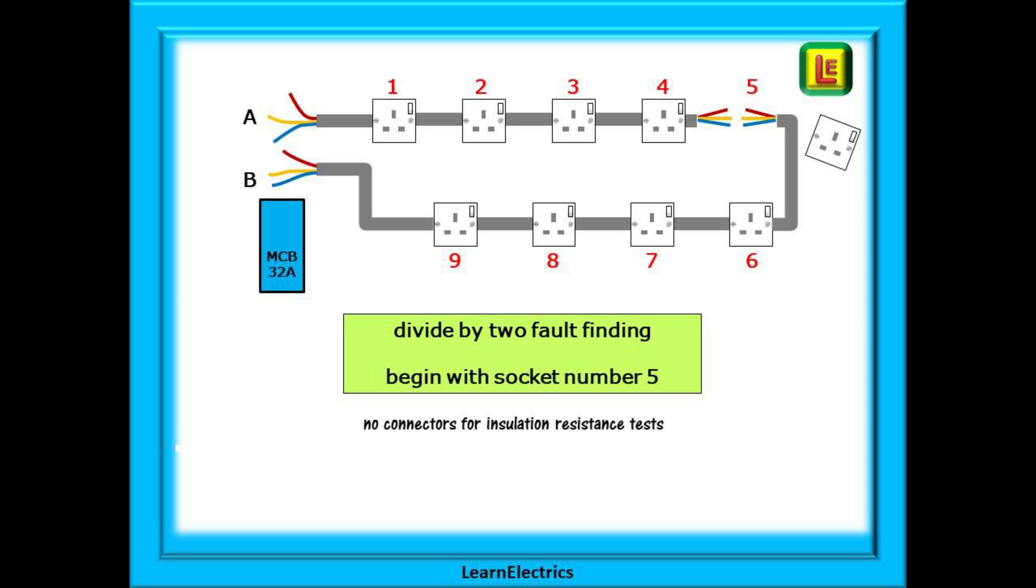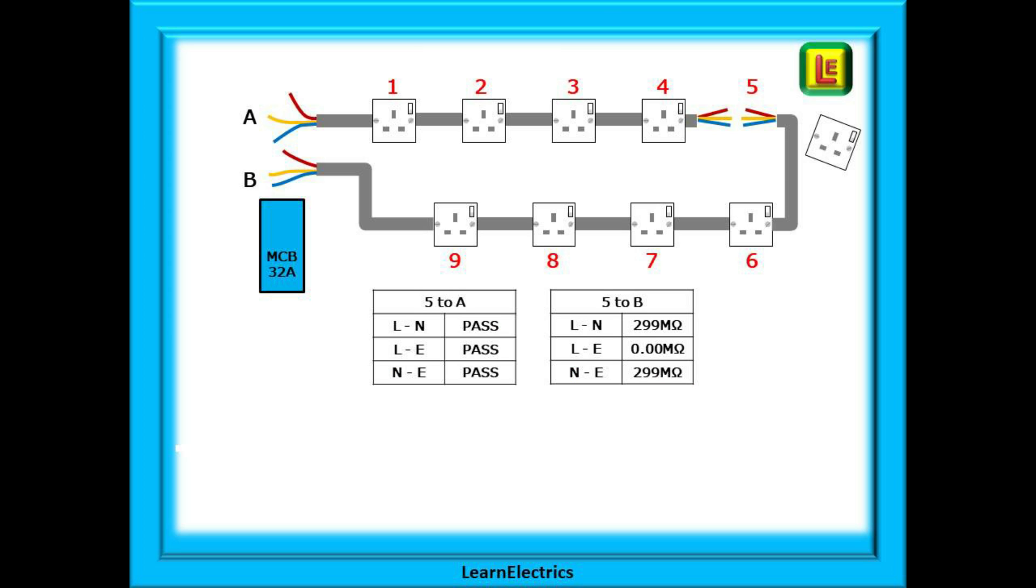Begin by sketching out the sockets and then numbering each one on your sketch. Now we can carry out our divide by two fault finding and begin by removing socket number five. Test from socket five back to cable A in the consumer unit: live to neutral, live to earth, and neutral to earth, and write down the results. There is no need for any links—in fact we do not want links. We want all the conductors to be separate. Now IR test from socket five back to cable B in the consumer unit and record the results. For us, five to cable A all passes, so the problem is not in that leg. From five to cable B shows a fail between live and earth, so the fault is in this half.